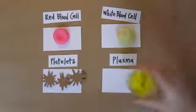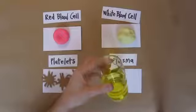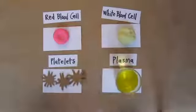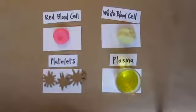And last up is plasma. Plasma is mostly water, it's a little bit yellowish, and it carries all the other parts of the blood.